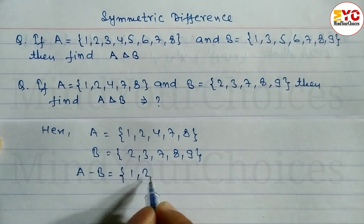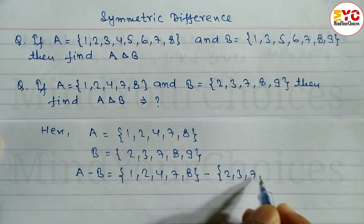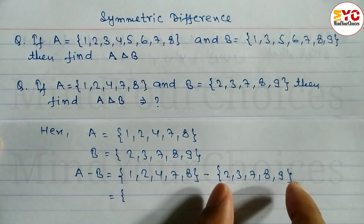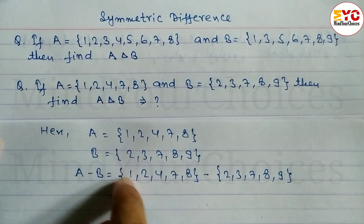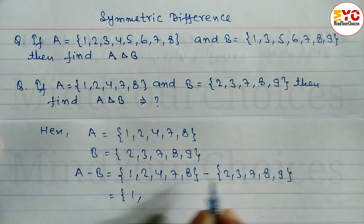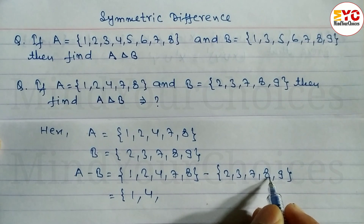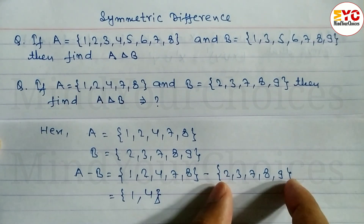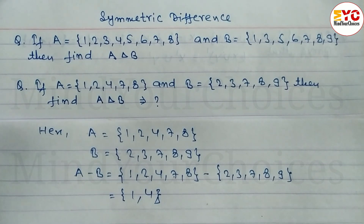Difference between A and B: set A = {1, 2, 4, 7, 8} minus set B = {2, 3, 7, 8, 9}. Now we subtract these two sets. We are subtracting set B, so elements remaining in set B we do not write — only elements remaining in set A are the answer. 1 is not in B so we write 1. 2 cancels. 4 is not in B so we write 4. 7 cancels. 8 cancels. Elements 3 and 9 remain in B but we do not write those. So A minus B = {1, 4}.